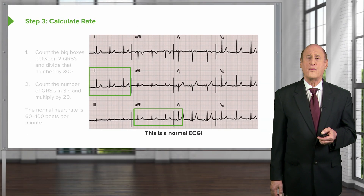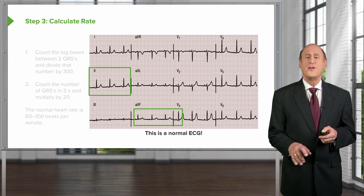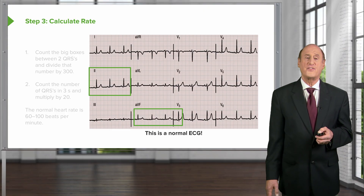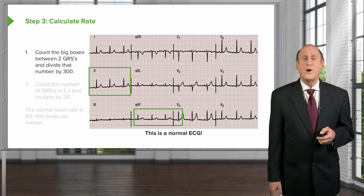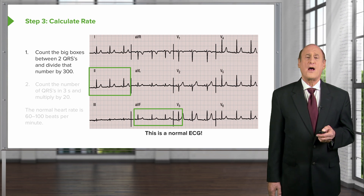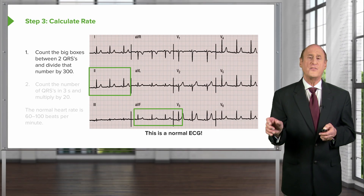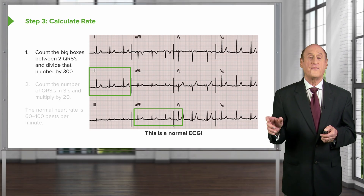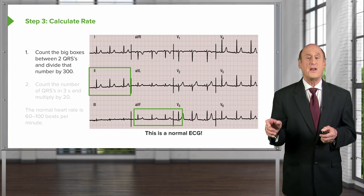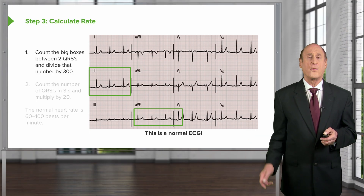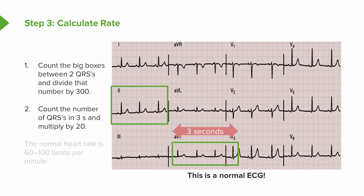Notice how nicely the QRSs progress. That whole strip along the bottom is continuous, so you're actually seeing one set of P waves after another. In order to obtain the heart rate, you count the number of big boxes between two QRSs and divide by 300. Two big boxes gives 150; three big boxes gives a rate of 100; four boxes gives 75. You can also count the number of QRSs in three seconds and multiply by 20, but usually we use the rule of 300.